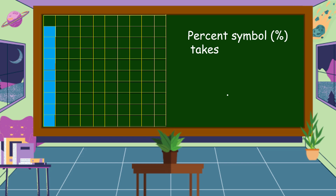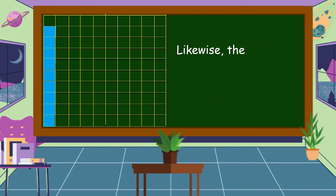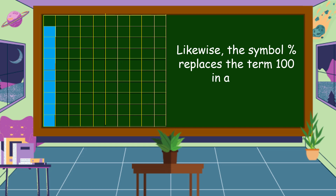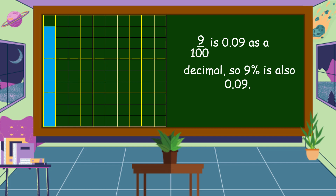The percent symbol takes the place of the denominator 100 in a fraction — that is why 9 over 100 is equal to 9 percent. Likewise, the percent symbol replaces the term 100 in a ratio, so 9 is to 100 is 9 percent. We already know that 9 over 100 is nine hundredths as a decimal, so nine percent is also nine hundredths.